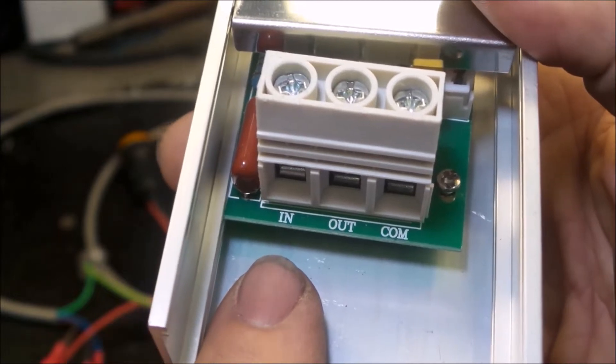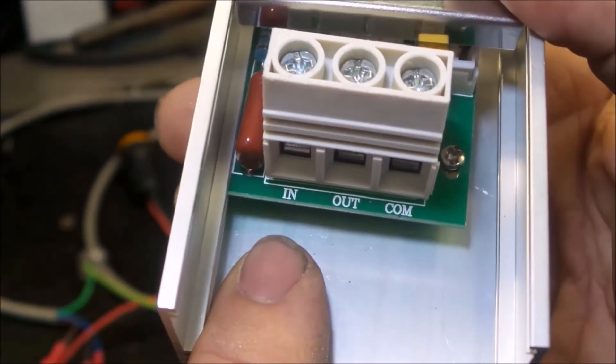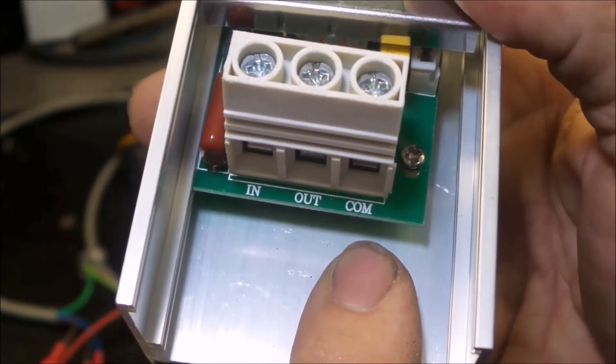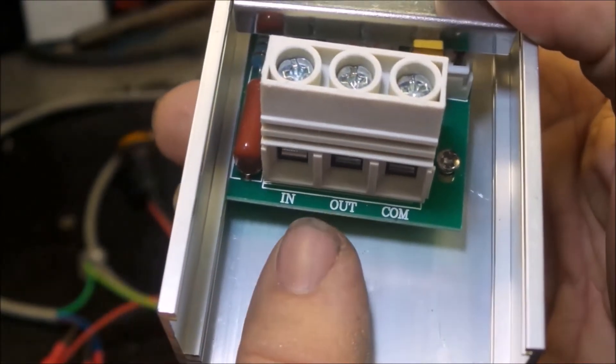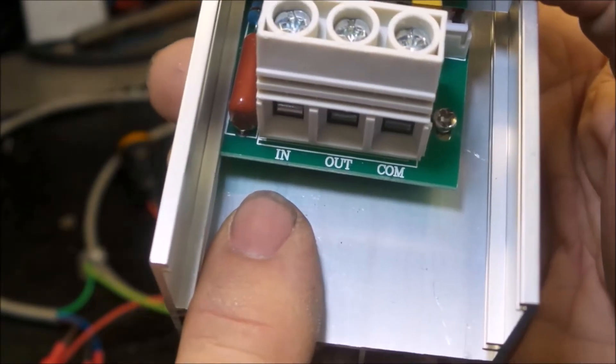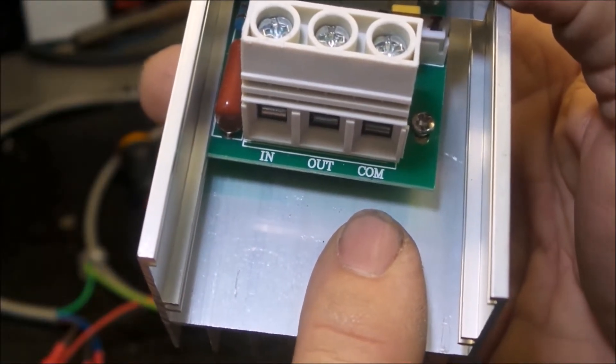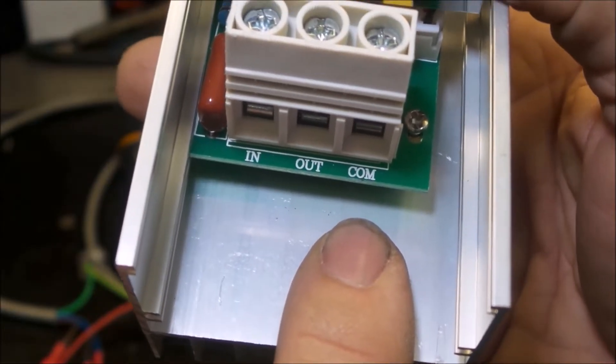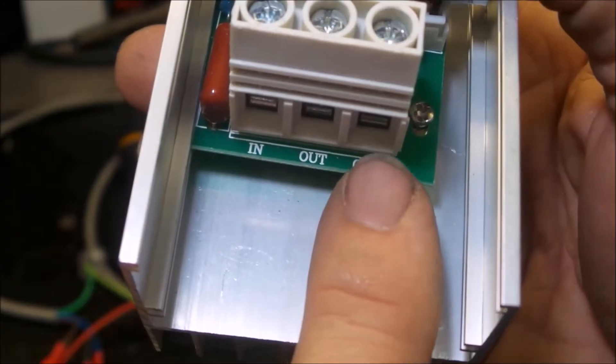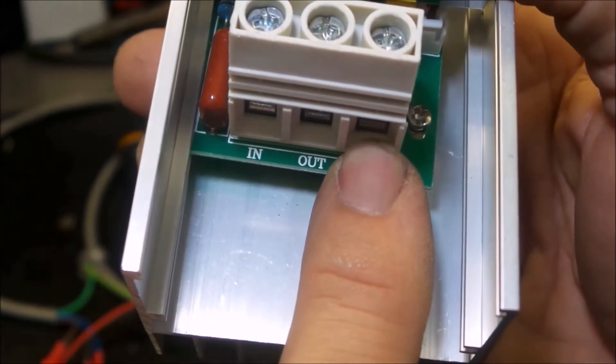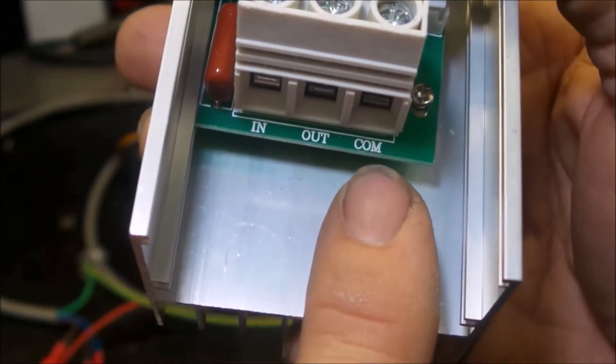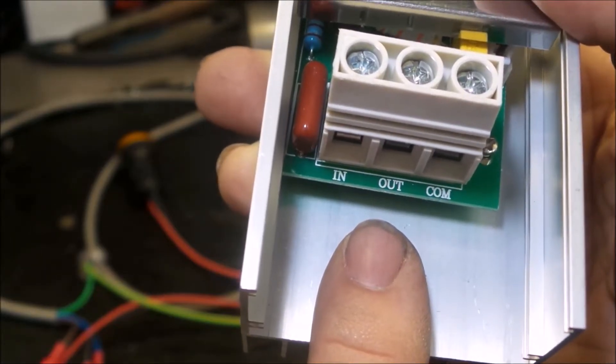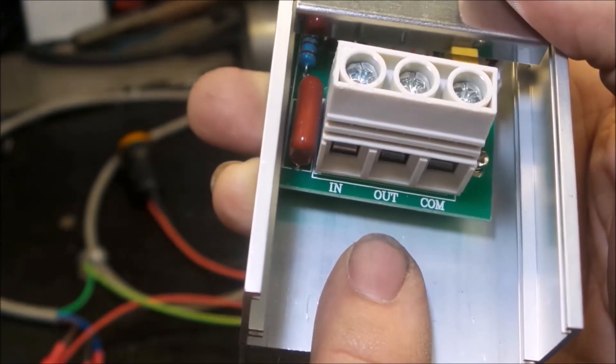In is your mains active in. So either the red or the brown wire. Comm is your neutral connection. Now this is your neutral in and out. And out is your active out. So you've got active in, neutral in, active out, neutral out. So there will be two neutral wires going into the comm connection. One is the AC input and the other is the AC output on the neutral side. And then active in, active out. I'll get some wires in there so you can get a better idea of what I'm talking about.